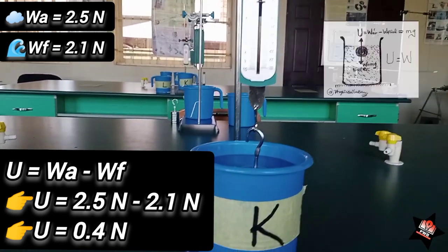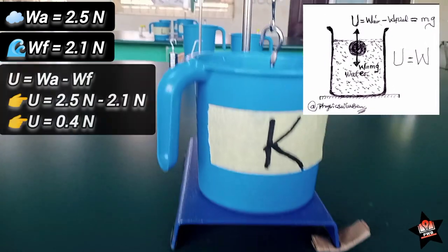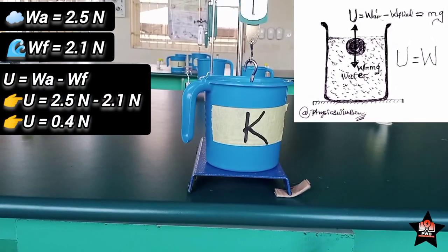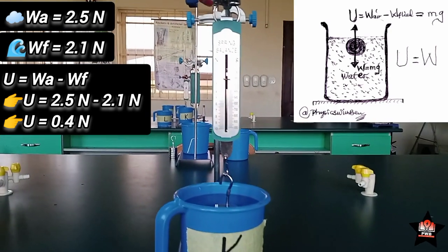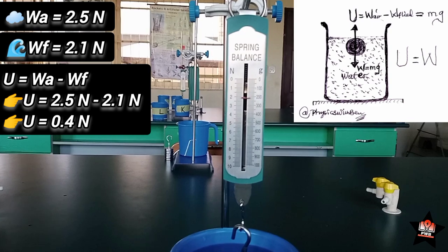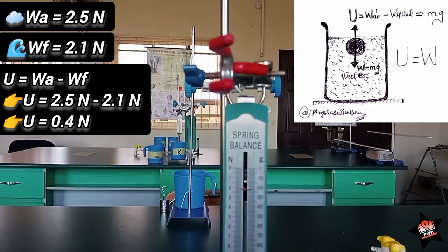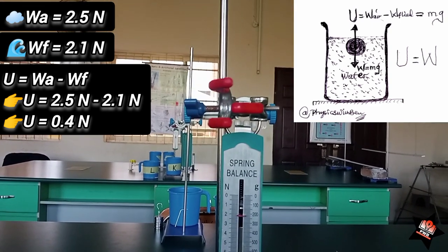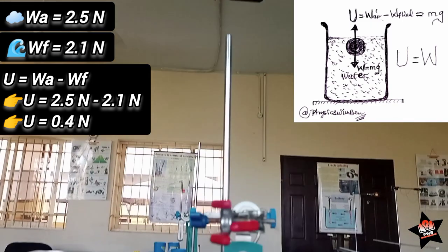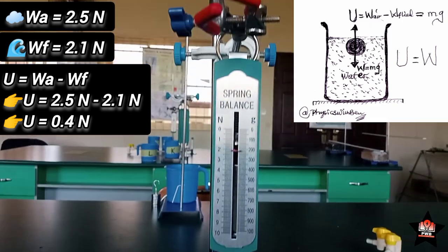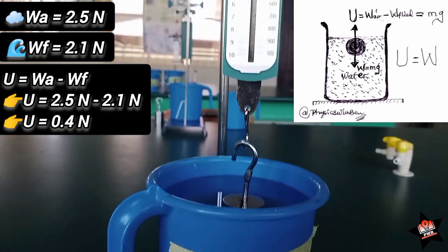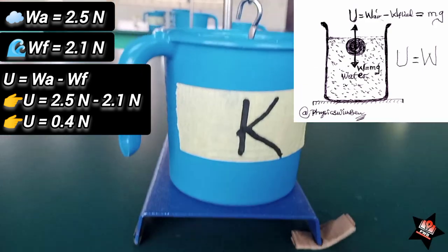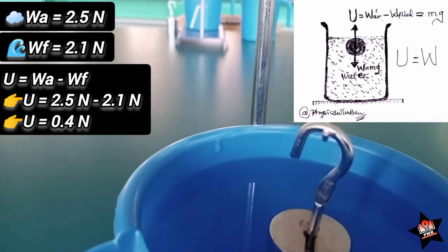So, the principle of flotation states, once again, that for a body to be able to float in fluid, that is liquid or air, the upthrust must be equal to the weight of the body. And this will lead us into what we call the Archimedes principle, which is what I'm going to explain in our next video. Thank you and God bless you. Bye-bye.